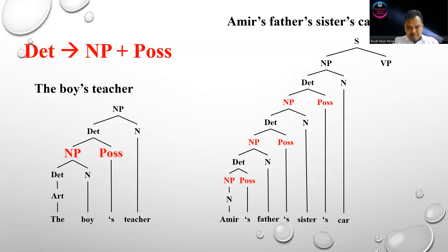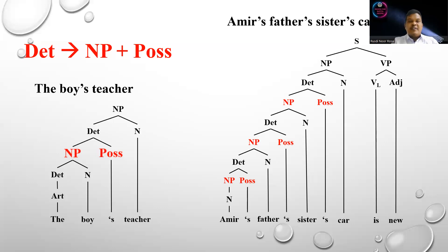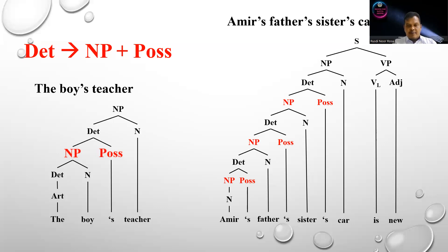Now for the VP: the VP is composed of a linking verb (VL), because it is represented by the to-be verb 'is,' and then we have an adjective. So the structure of the VP here is VL plus adjective.